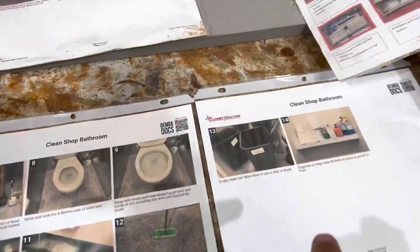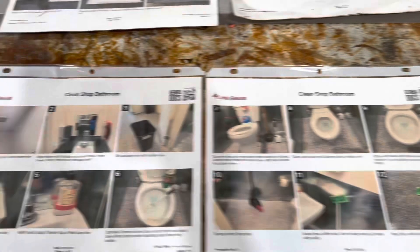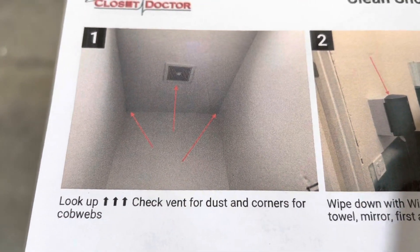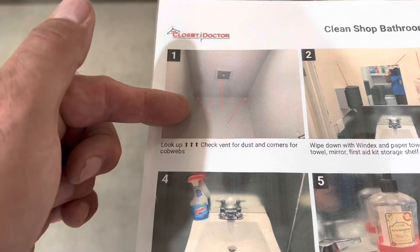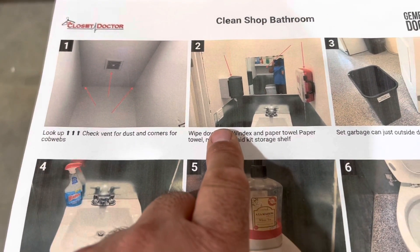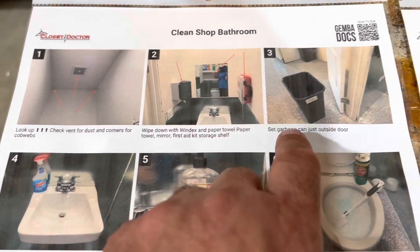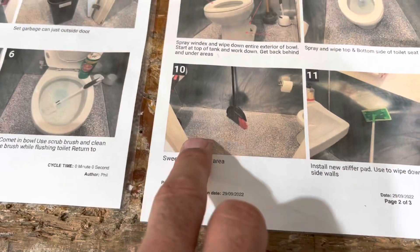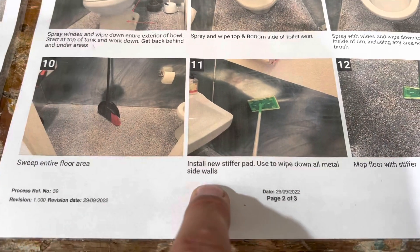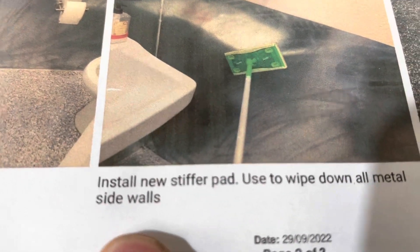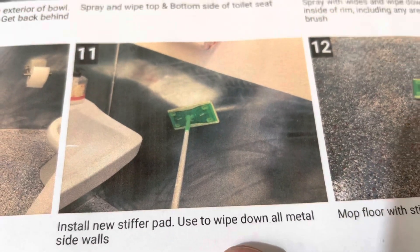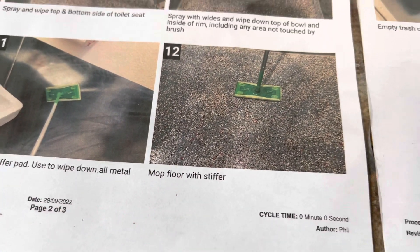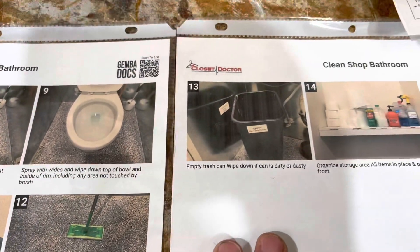For cleaning our bathroom, we've got a 14-step process. It covers things like: the first step is look up and check the vents for dust and cobwebs in the corners. Then it tells you where to start, what cleaner to use, where to put the garbage can, and it goes through the whole process — sweep the entire floor, use a Swiffer pad to wipe down all the metal sidewalls, then mop the floor with that Swiffer. It tells us the order to do things — the whole deal.